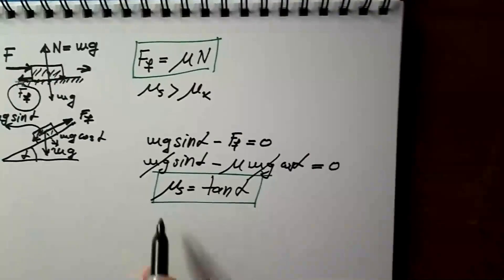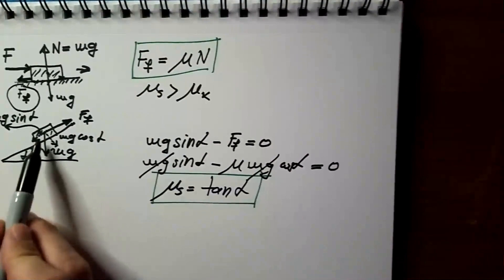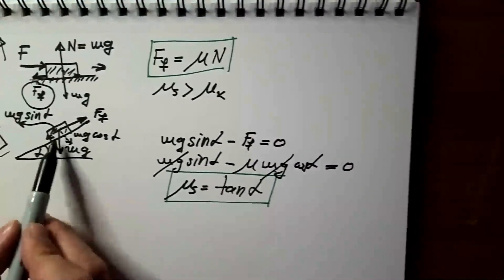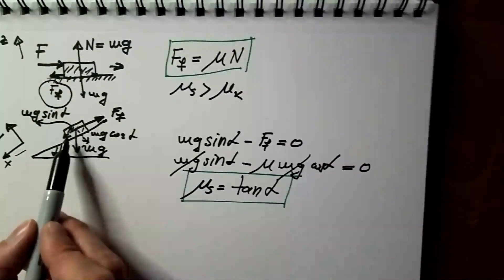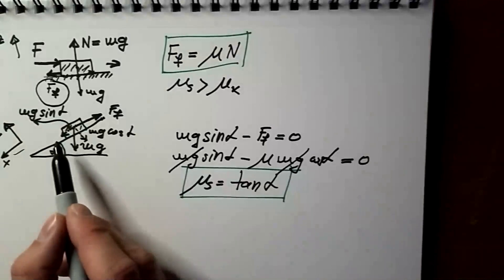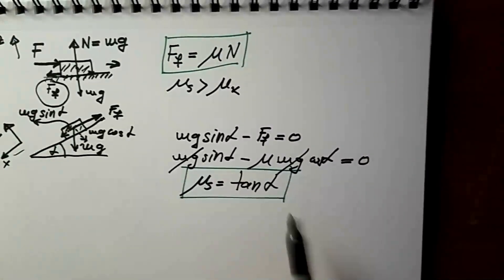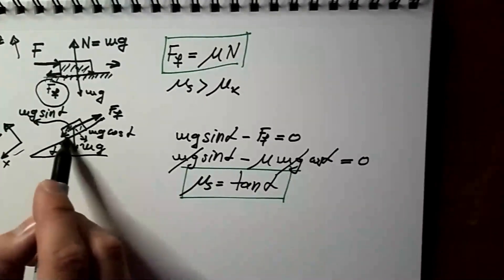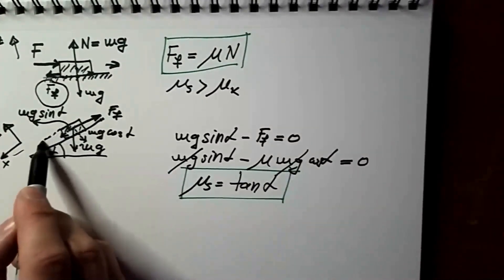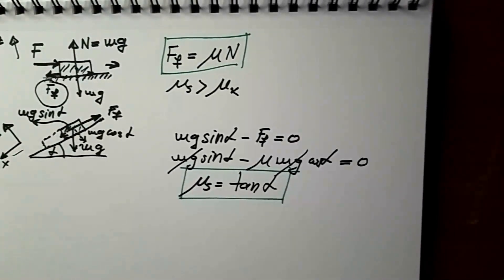There are two very non-intuitive things we can conclude from this expression. Number one: the friction coefficient doesn't depend on the mass — there is no mass in the expression. Which means if this object is 1 kg or 200 kg, the friction coefficient will be the same. Secondly, and also totally non-intuitive, it doesn't depend on the surface area. Which means if this object had a much larger contact area, the static friction coefficient would still be the same. Completely non-intuitive things — that's pretty much what we can say about the force of friction.